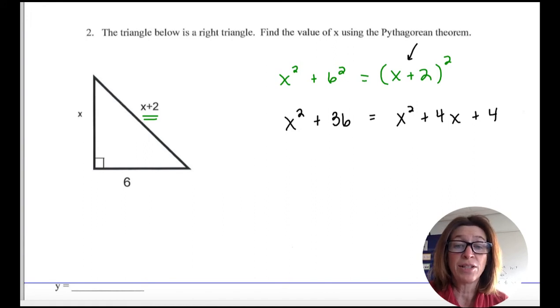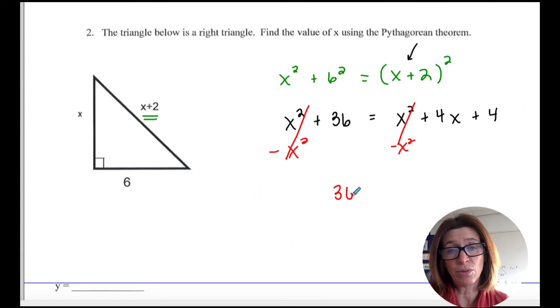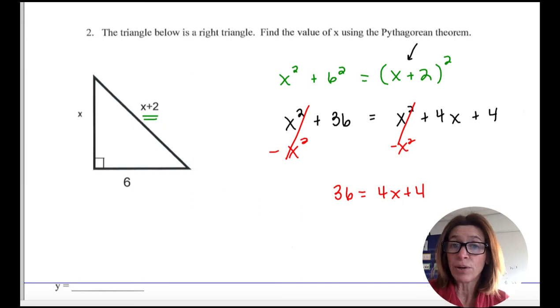So then you see it's quadratic, so you try to get everything set equal to 0. And what's really great about this problem is that when you do that, the x squareds cancel, giving you 36 equals 4x plus 4. And you solve the linear equation. It's linear because the highest exponent is 1.